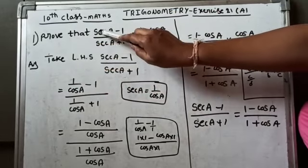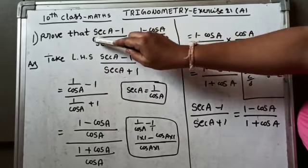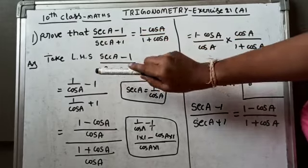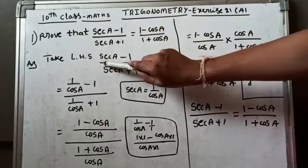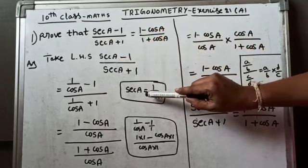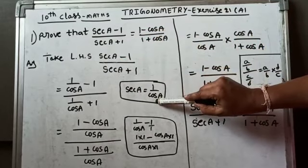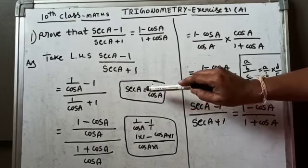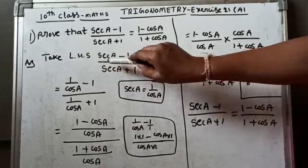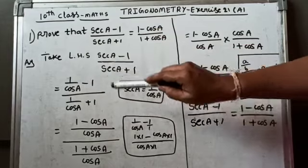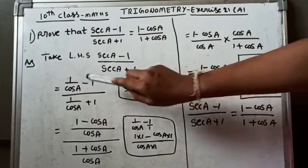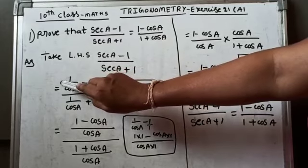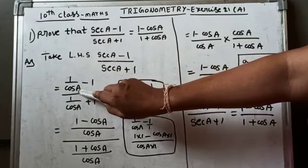LHS is (sec A - 1) / (sec A + 1). The reciprocal formula for sec A is 1/cos A. So we replace sec A with 1/cos A. In the numerator: (1/cos A) - 1.